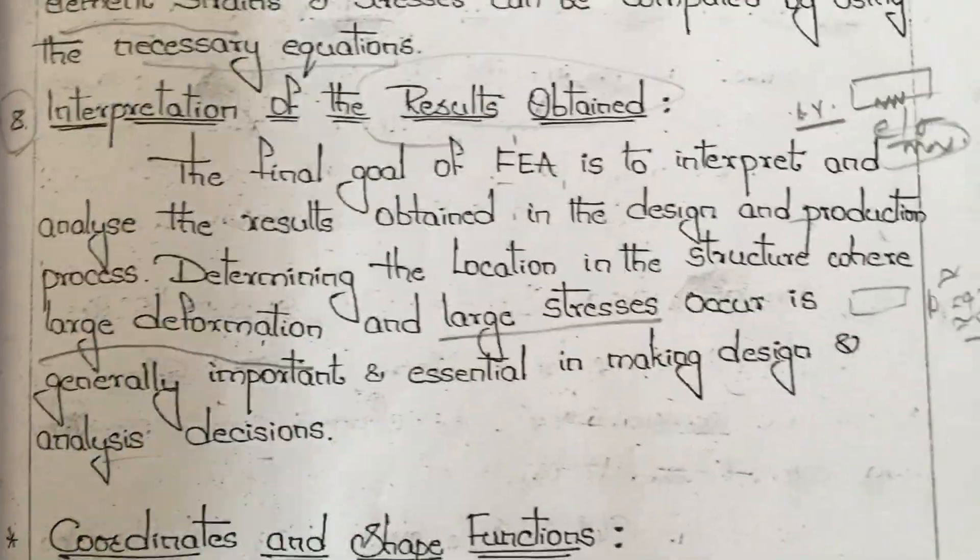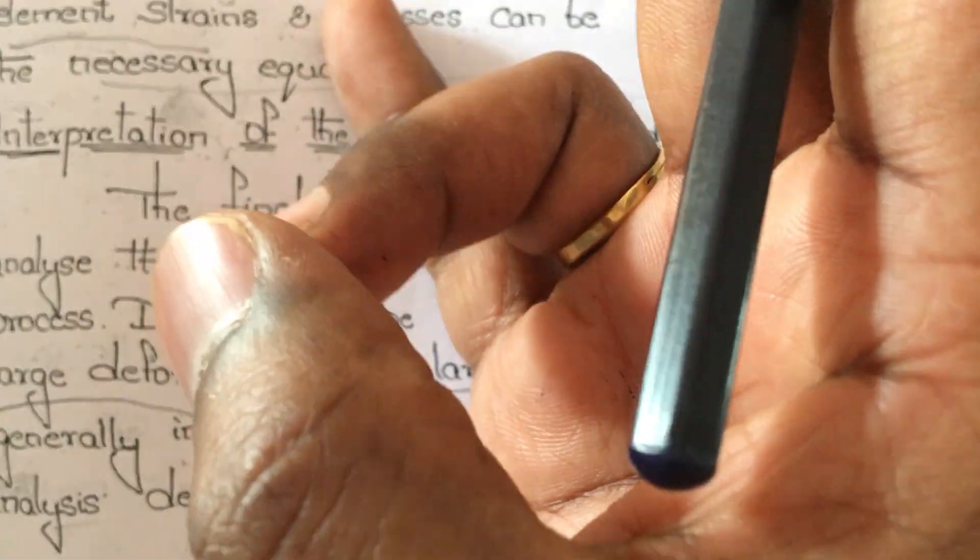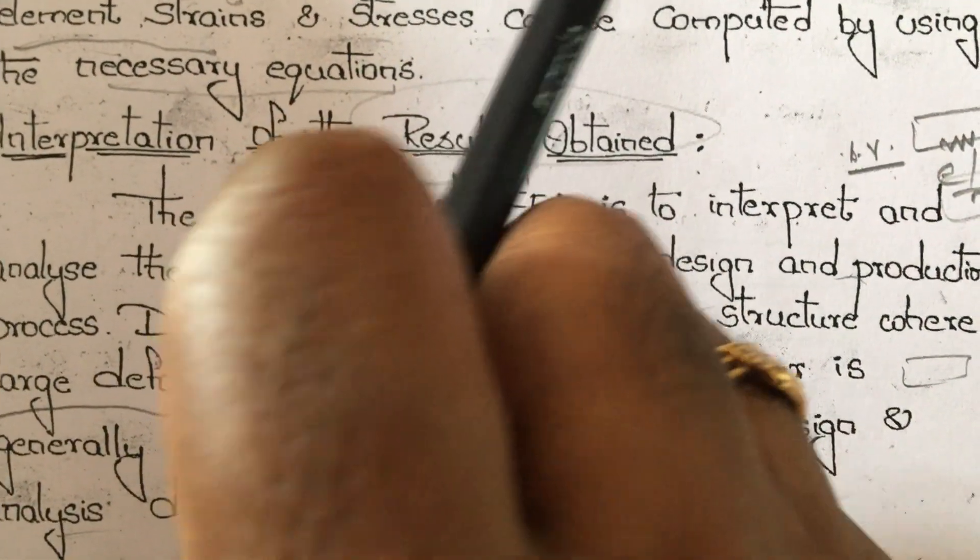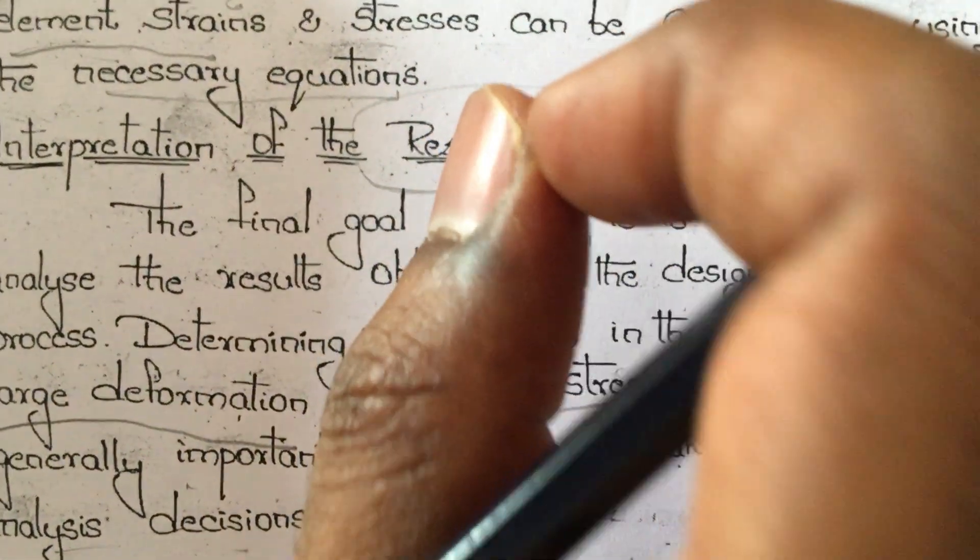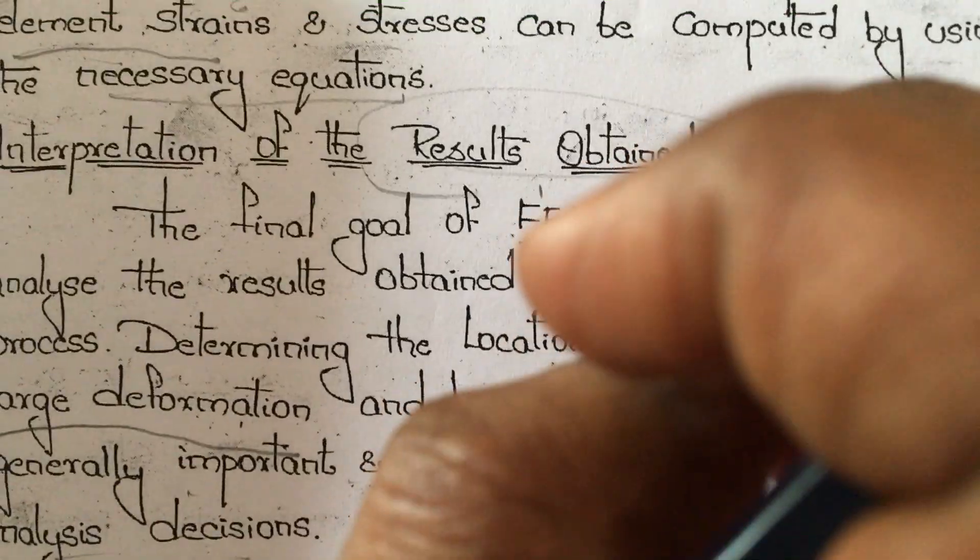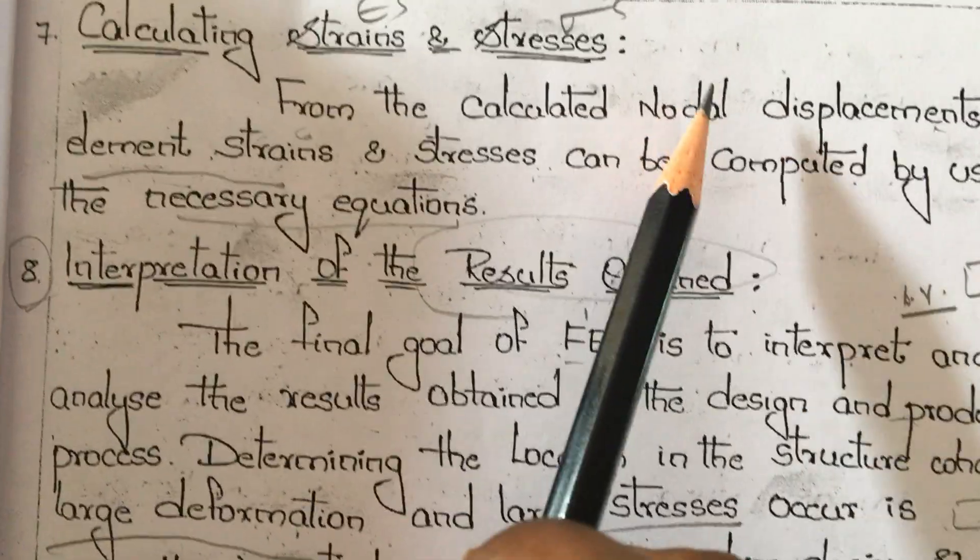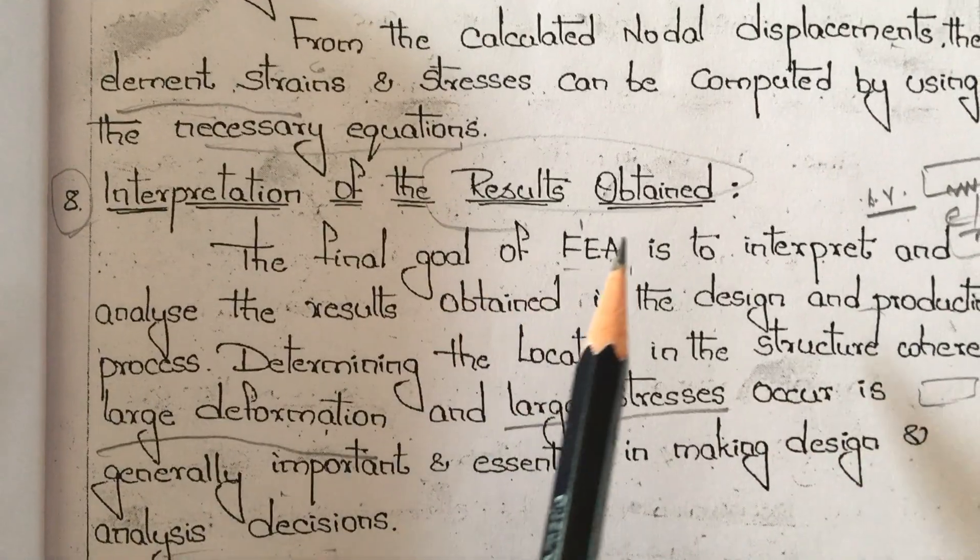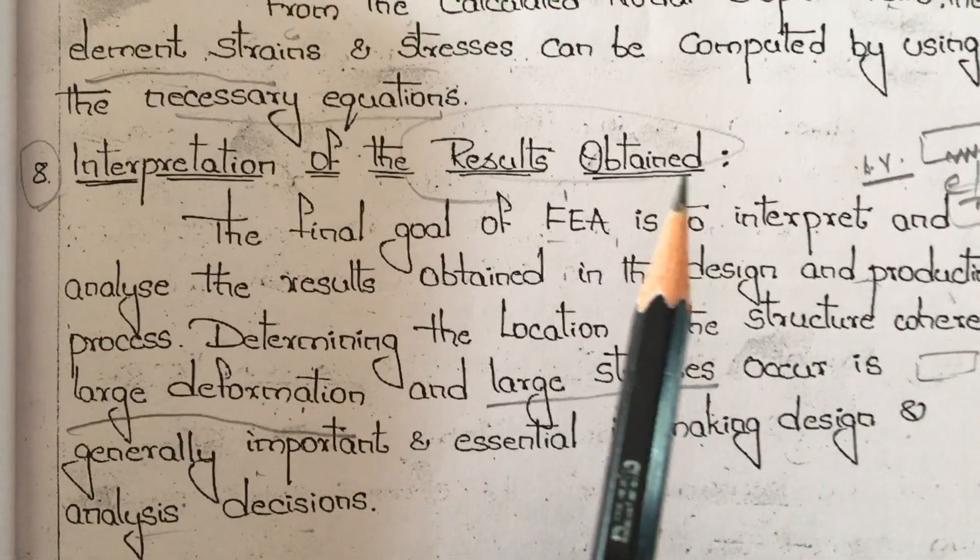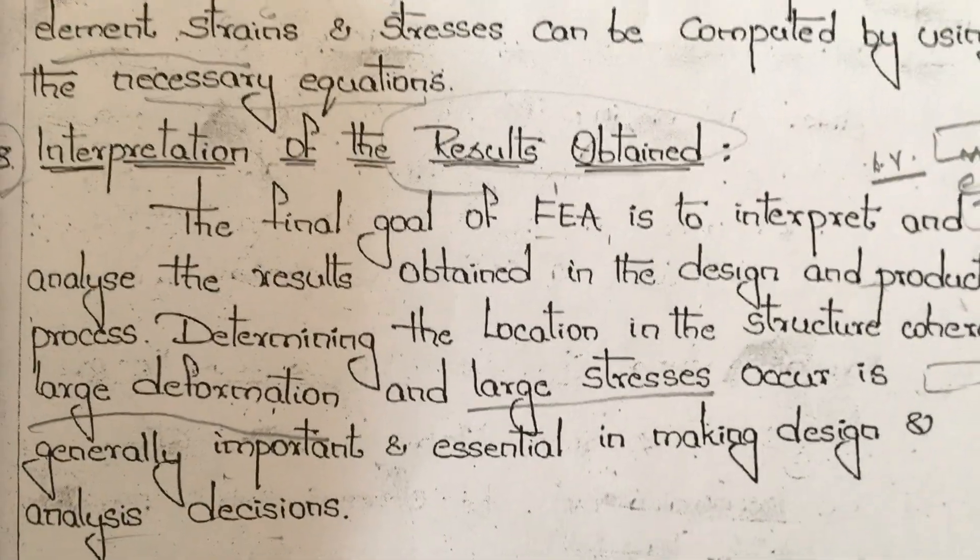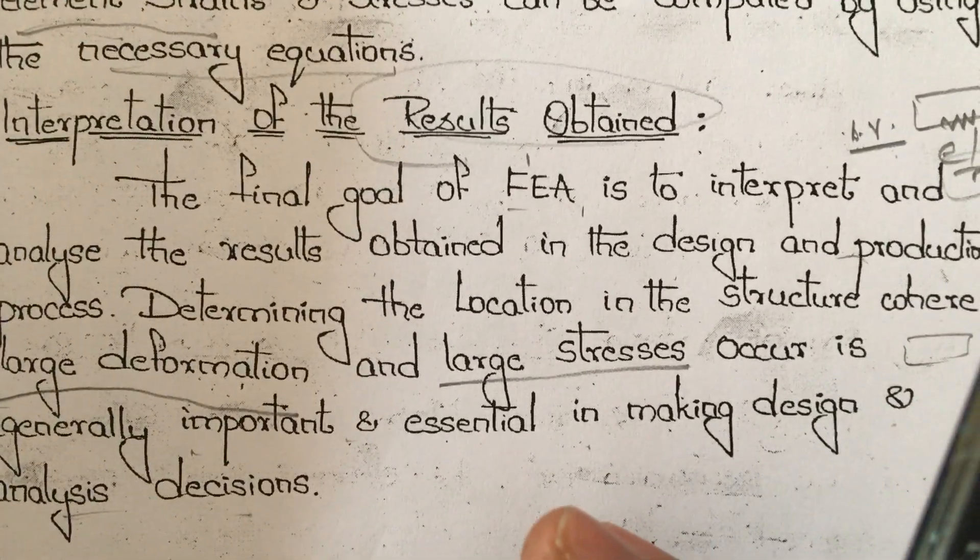We have how many steps? First is discretization, then displacements, then elemental stiffness and elemental load vector, then global load vector and global stiffness matrix. Later we work out boundary conditions, then stresses and strain calculations, then interpretation of results. These are the step-by-step procedure to work out any problem for finite element methods or analysis.